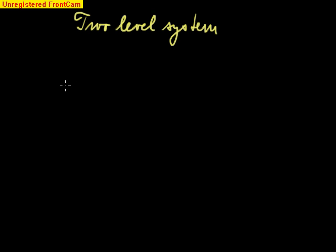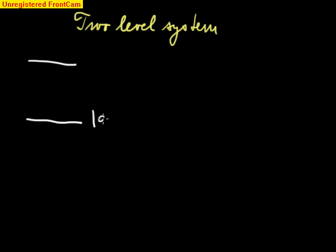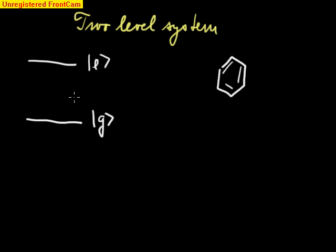We will now discuss the simplest model worth considering in nonlinear spectroscopy, or indeed any type of spectroscopy: the two-level system. By two-level system I mean a ground state and an excited state of some system — say, a small molecule like benzene or chlorophyll. This would have its electronic ground state and some first excited state reachable by optical excitation.